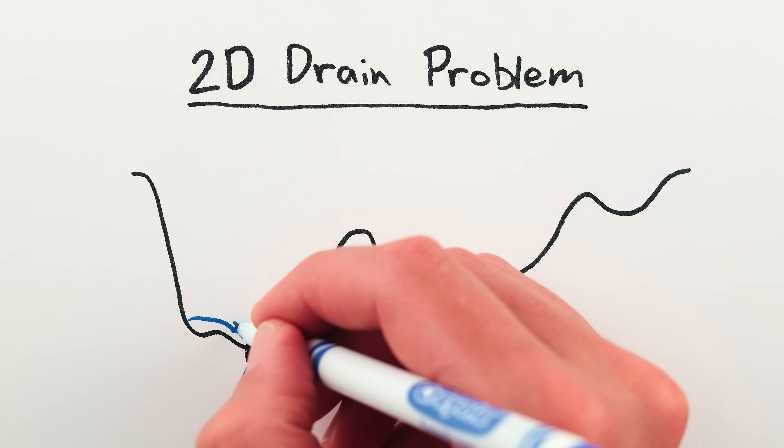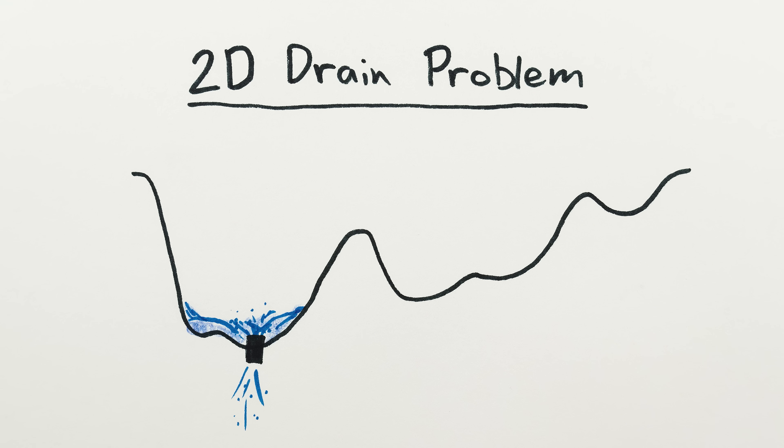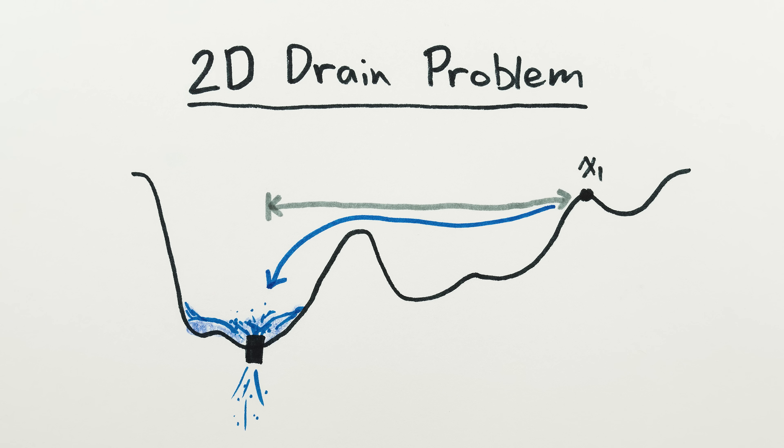In 2D, draining realistic looking oceans is still pretty easy, even if it's non-local. You just check if every point between the location and the drain is below the height of that location. If so, then voila – water can drain from that location.